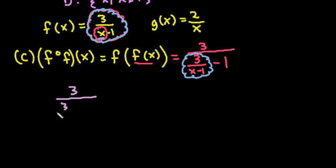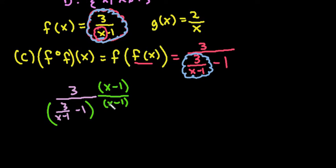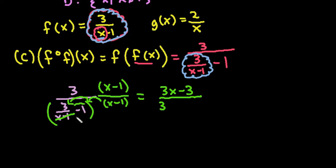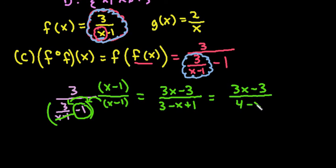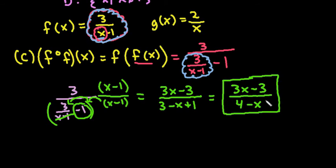To simplify, I multiply both numerator and denominator by (x − 1), the denominator of the inner fraction. Distributing on top gives 3. In the denominator, the (x − 1) cancels on the first part leaving 3, and distributing the negative 1 gives −x + 1, so the denominator becomes 3 − x + 1 = 4 − x. On top I get 3·1 = 3, wait — distributing fully gives 3x − 3 in the numerator and 4 − x in the denominator. So f(f(x)) = (3x − 3)/(4 − x). I leave it like this because the groups differ and cannot be cancelled.